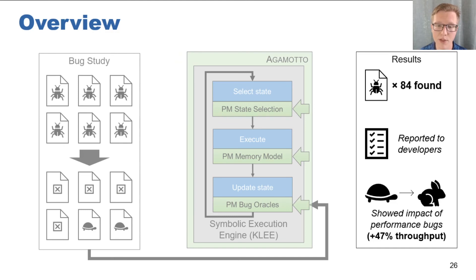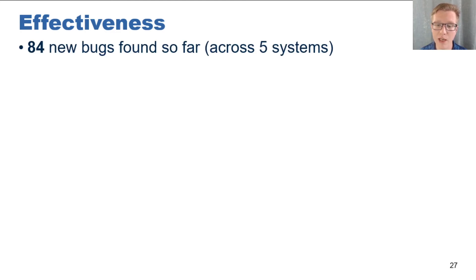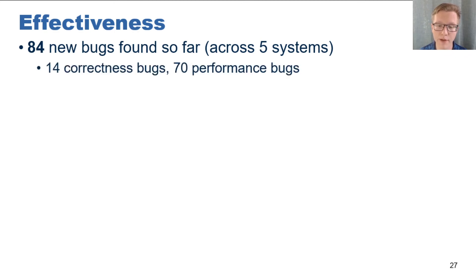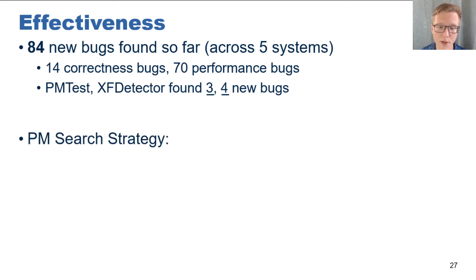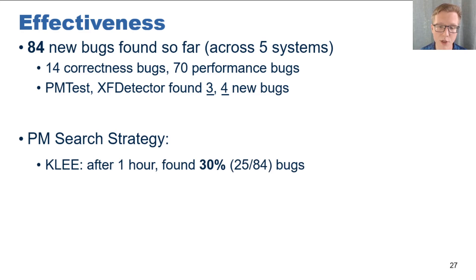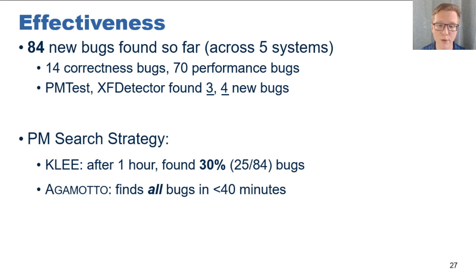Finally, I want to briefly discuss how we were able to use Agamotto and the results we found. Most importantly, we found 84 new bugs in total across the five systems we tested. Of these bugs, 14 are correctness bugs and 70 are performance bugs. Our closest related work, PMTest and XFDetector, were able to find three and four new bugs respectively. We also evaluate the effectiveness of Agamotto's search strategy. We compare Agamotto's PM-aware strategy to Klee's default search strategy. After an hour of runtime, Klee's search strategy only found 30% of the bugs that we found in total. In contrast, Agamotto's strategy was able to find all bugs in under 40 minutes.